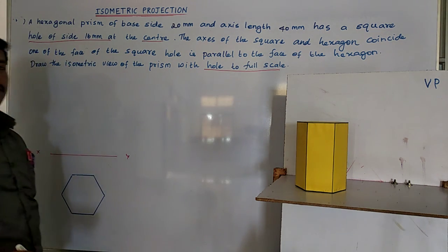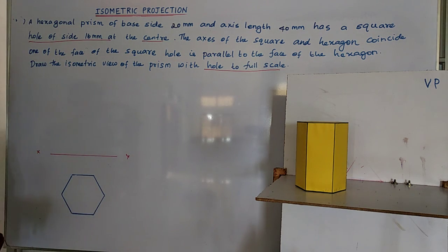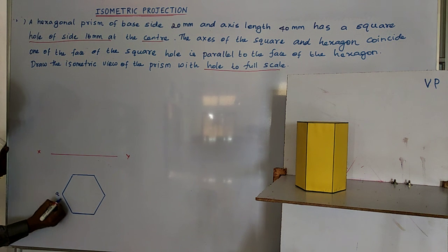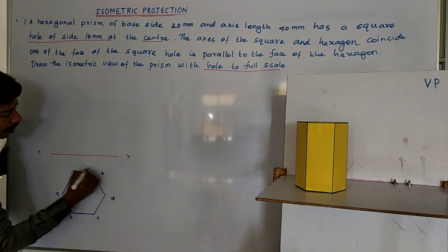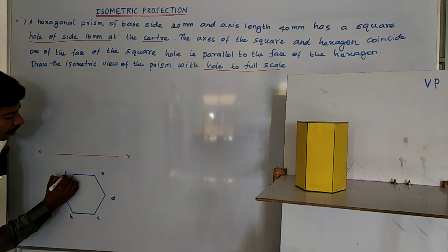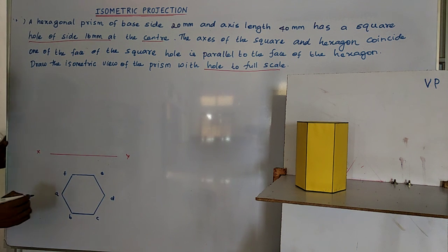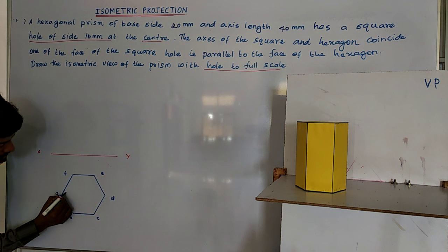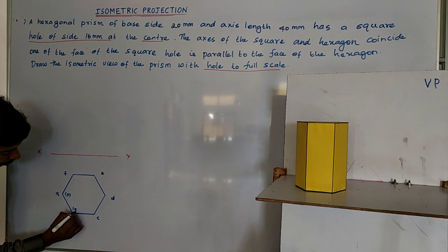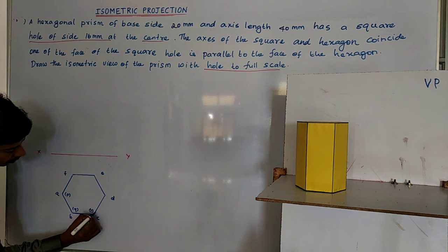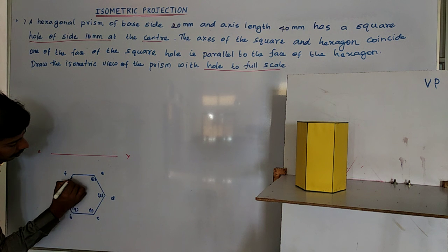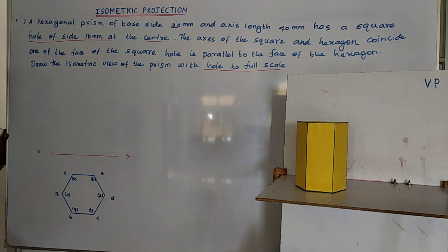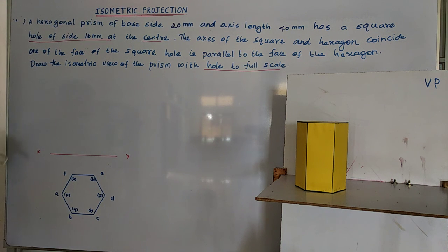The top six corners and bottom six corners — I name the top corners as A, B, C, D, E, and F, and the bottom corners as P, Q, R, S, T, and U.